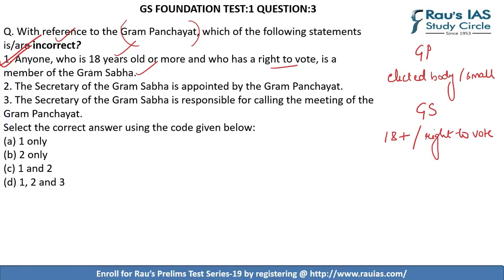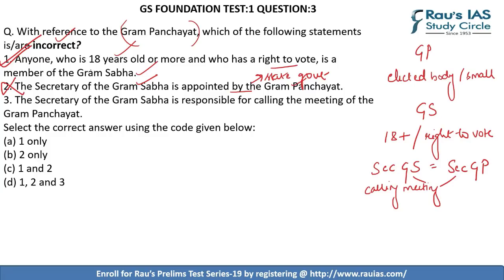The second statement says the secretary of Gram Sabha is appointed by the Gram Panchayat. This is incorrect — the secretary of Gram Sabha is appointed by the state government. The third statement says the secretary of Gram Sabha is responsible for calling the meetings of Gram Panchayat. The secretary of Gram Sabha also serves as the secretary of Gram Panchayat and is responsible for calling meetings for both bodies, so statement 3 is correct. The final answer is statement 2 only.